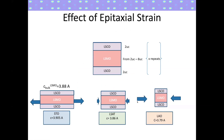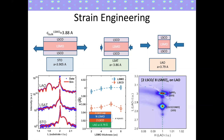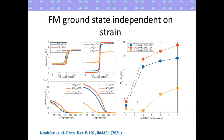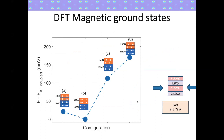We have also been playing games by trying to change the strain state to modify orbital polarizations. We can grow these films on LAO, where we have about 2% compressive strain, and still maintain good epitaxy. Independent of strain, very thin LSMO films still have a ferromagnetic ground state, but as we increase LSMO thickness there is a more significant difference in magnetization between LSAT — where strain is close to zero — and LAO, where we have large compressive strain. DFT helps us determine the magnetic ground state: the lowest energy state matches experiment, with LSMO spins ferromagnetic internally, LSCO spins also ferromagnetic, but with antiferromagnetic coupling between the two layers. Very close in energy is a state where all layers are ferromagnetic.